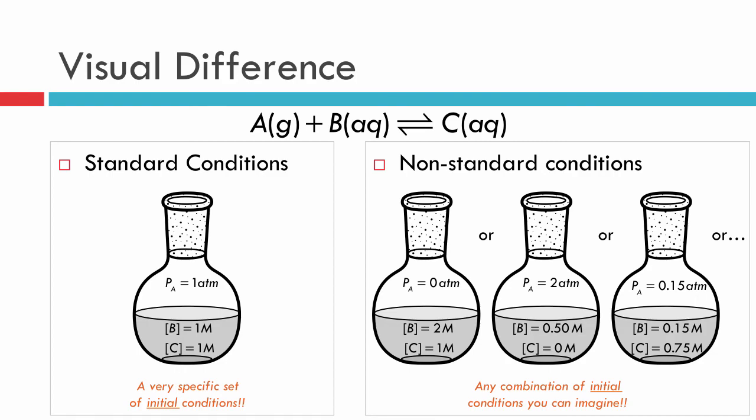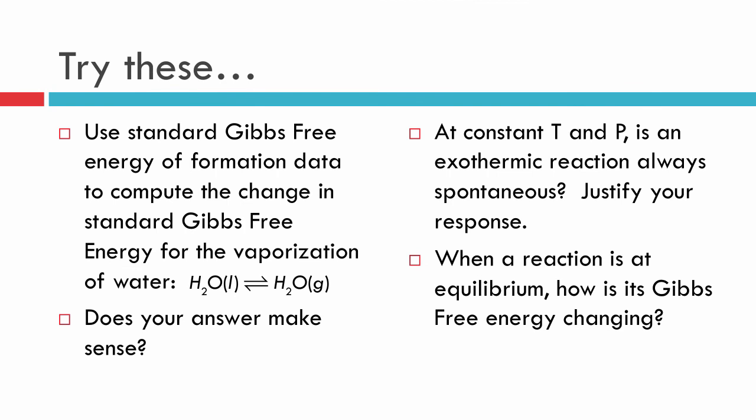Before you come into class, it would be great if you were to think about these questions right here. Using the table of Gibbs free energy formation data that you have, can you find what the free energy of vaporization of water is? And then ask yourself, does this number make sense to me? Try to interpret what the number means. Hey, how about this: if I have a reaction at constant temperature and pressure and it's exothermic, is that always spontaneous? So if you say yes, show me why it's yes, and if you say no, tell me why it's no.